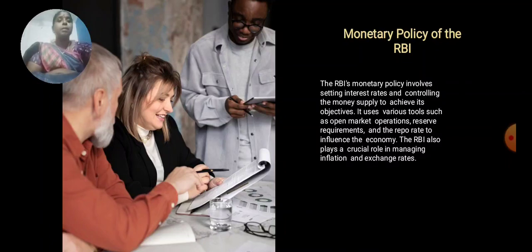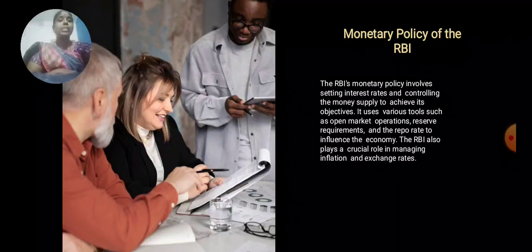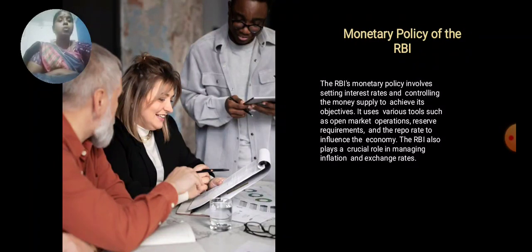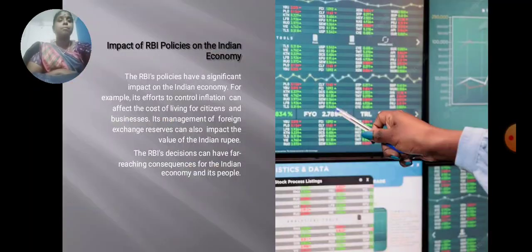Monetary Policy of RBI. The RBI monetary policy involves setting interest rates and controlling the money supply to achieve its objectives. It uses various tools such as open market operations, reserve requirements, and the repo rate to influence the economy. The RBI also plays a crucial role in managing inflation and exchange rates.